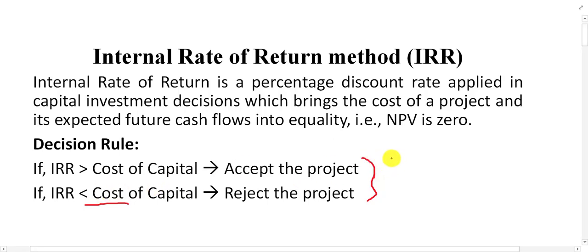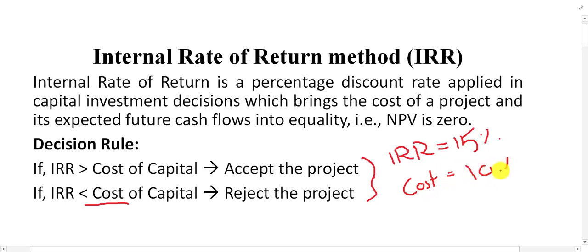For example, if we have calculated the IRR and it equals 15%, and the cost of the project is 10%, in this case we should accept the project. Why? Because the return of the project is 15% but the required rate of return or cost of the project is only 10%. On the other hand, if the cost is greater than or equal to the IRR, the project should not be accepted.